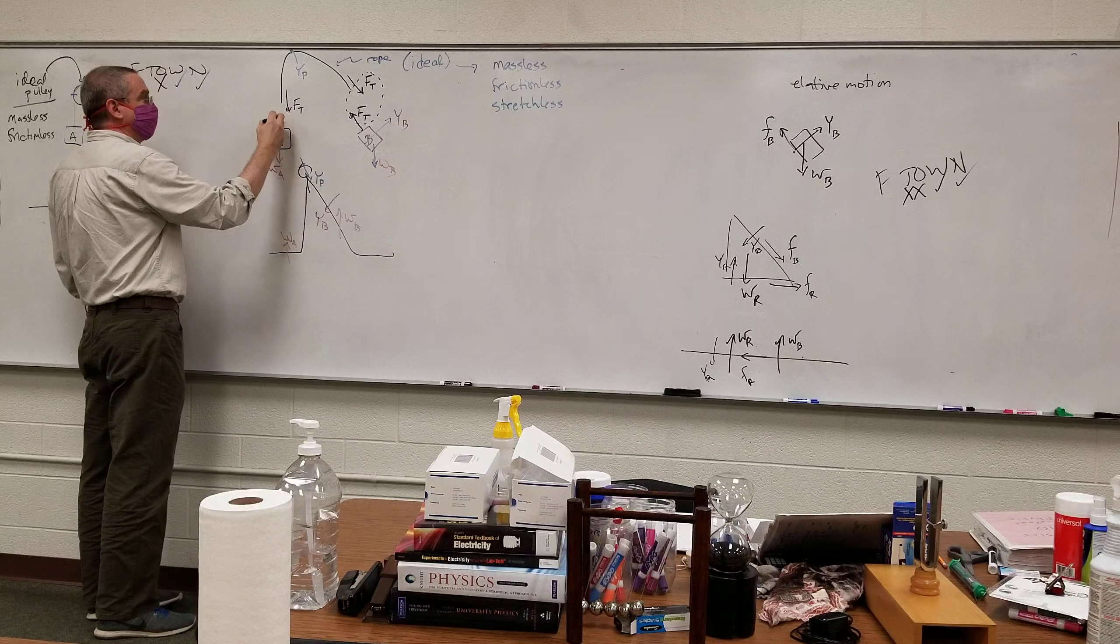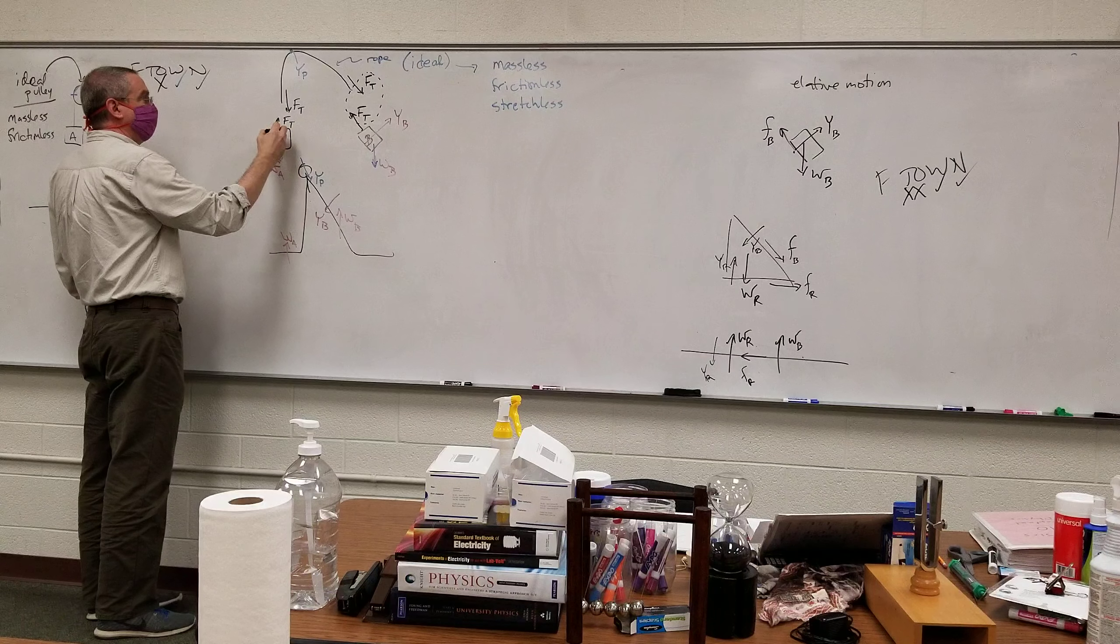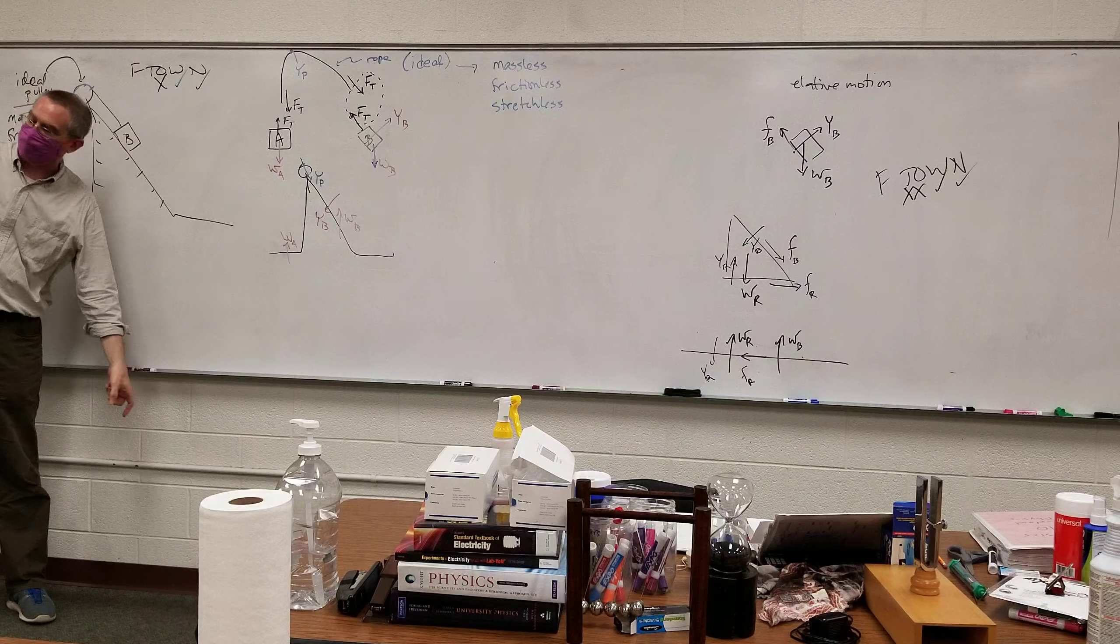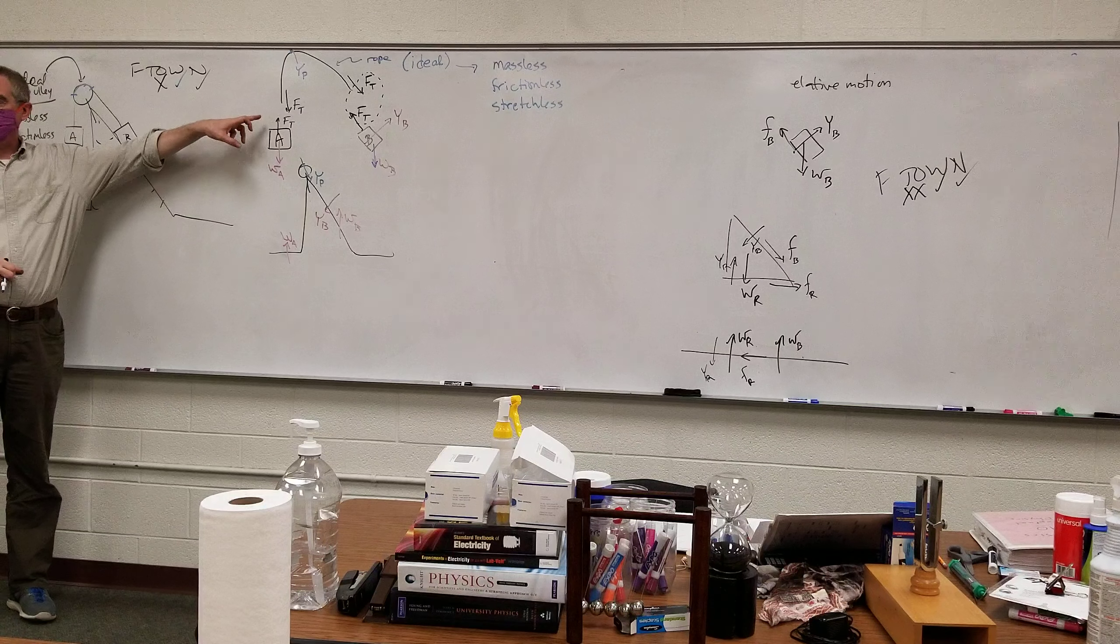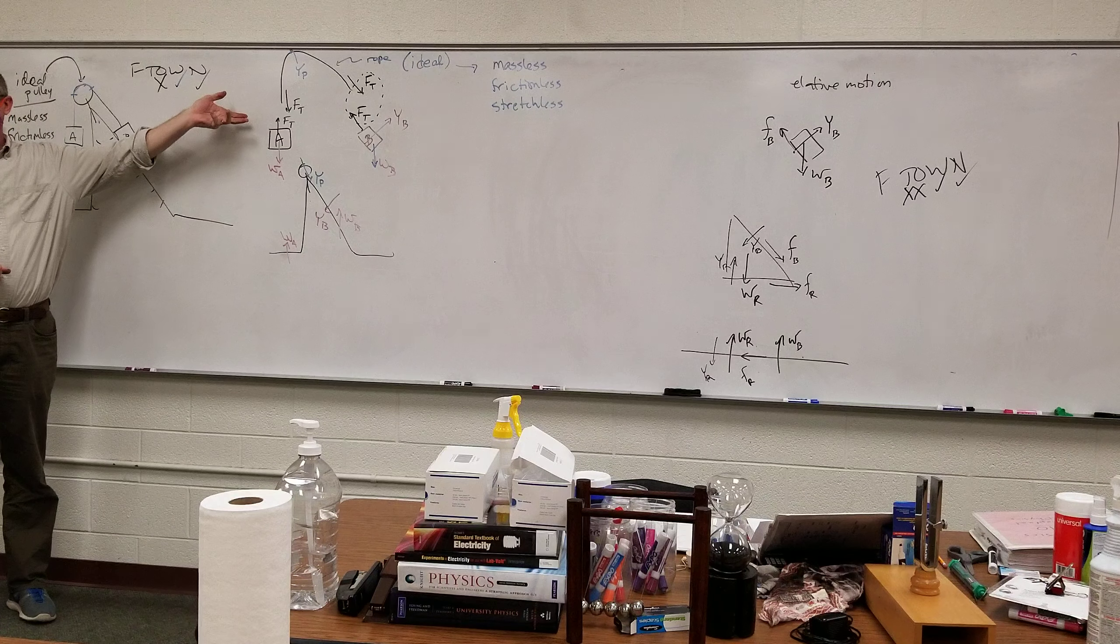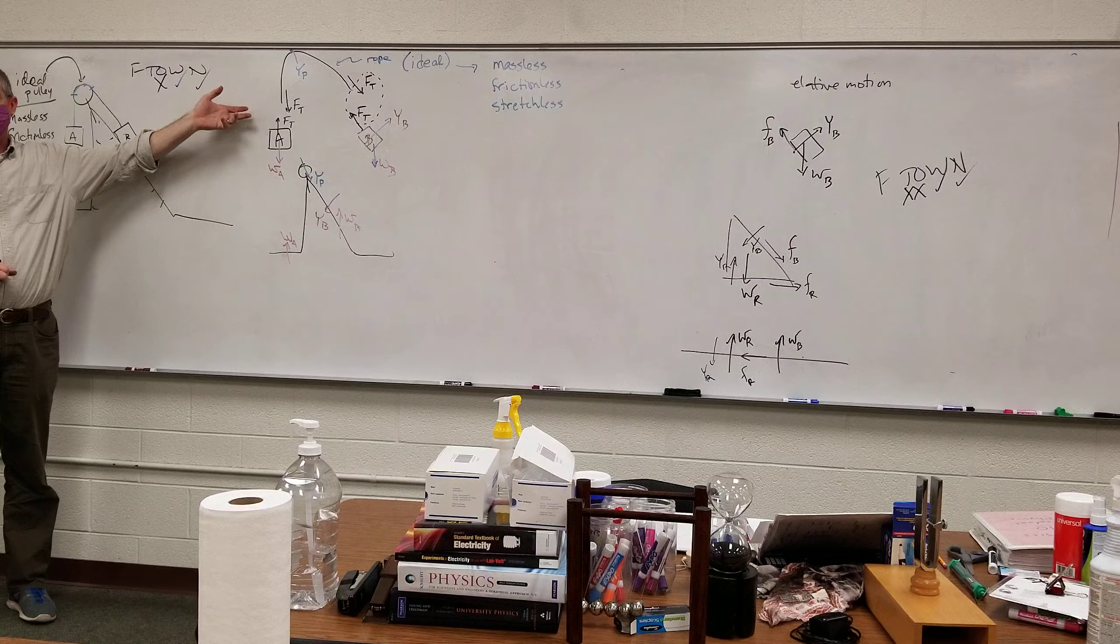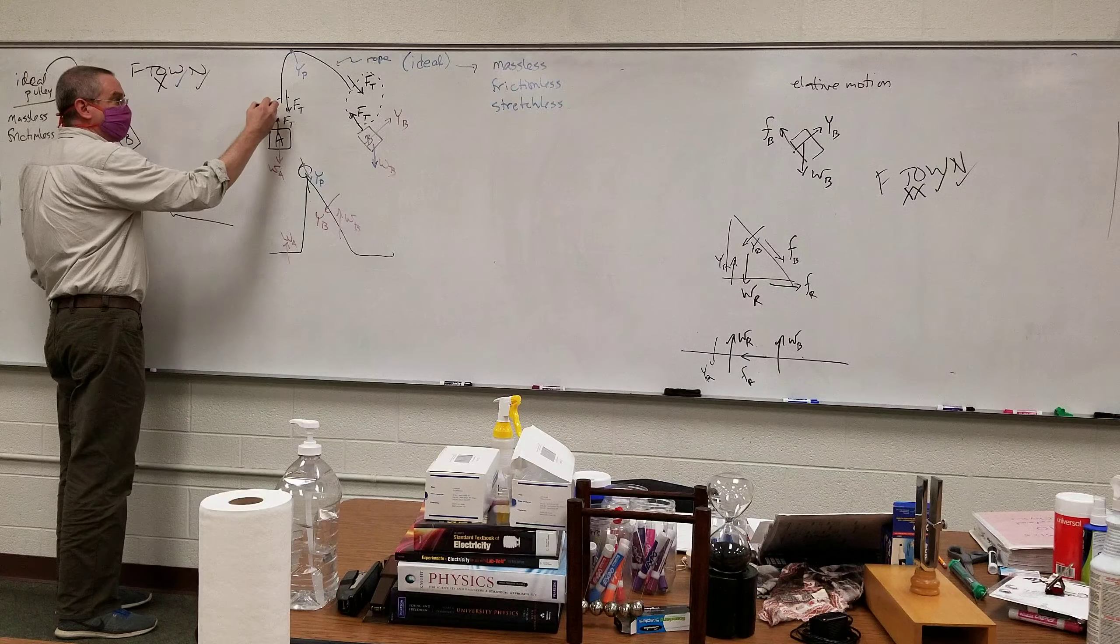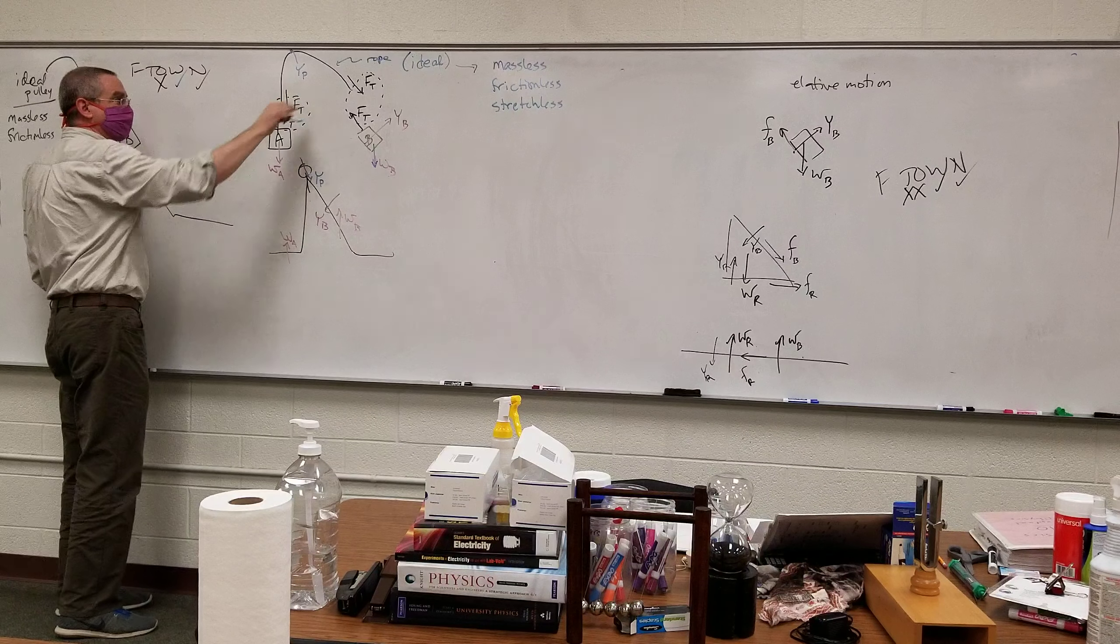I have a tension pulling down here, and a tension pulling up there. If I cut that rope, box A would fall. So, that tension is keeping A possibly from falling, or slowing it from falling. This is a pair of forces that go together, that's a pair.